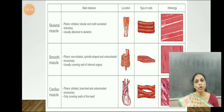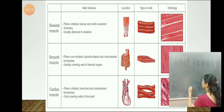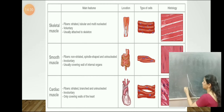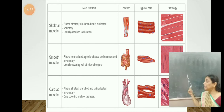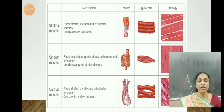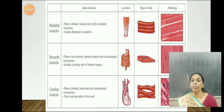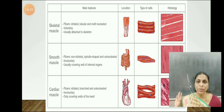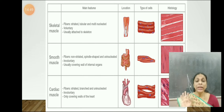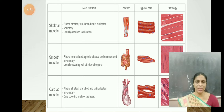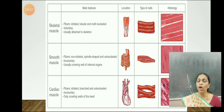Smooth muscles are spindle shaped, meaning the center portion is broad and the remaining portions are pointed. In the center we find a single nucleus, so smooth muscle fibers are uninucleate. Striations are absent and they are unbranched. Smooth muscles are involuntary, meaning they are not under our control, and hence they do not fatigue easily.